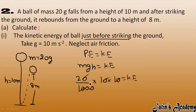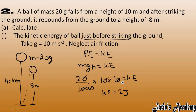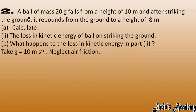So the kinetic energy we got is 2 joule. The initial kinetic energy is 2 joule. Now we have to find the loss in kinetic energy of the ball on striking the ground.